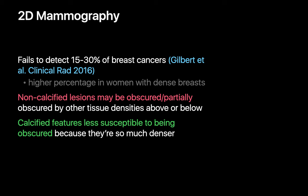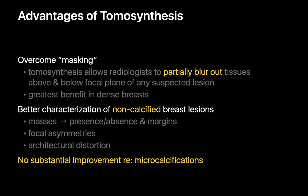While 2D mammography can catch many breast cancers, it's certainly not 100% sensitive. A significant subset of breast cancers may not be perceptible on 2D mammography, particularly in women with dense breasts. Non-calcified breast cancers, for example, could be obscured by other superimposed soft tissue in some of these situations. Tomosynthesis affords radiologists with a tool to partly overcome some of this masking, which helps in women with dense breasts. While tomosynthesis can improve our sensitivity and specificity with respect to non-calcified breast lesions, it doesn't seem to offer substantial improvement over standard 2D mammograms when it comes to breast cancers diagnosed based on suspicious calcified features, probably since the calcifications are very dense and therefore less susceptible to being obscured by superimposed soft tissues.